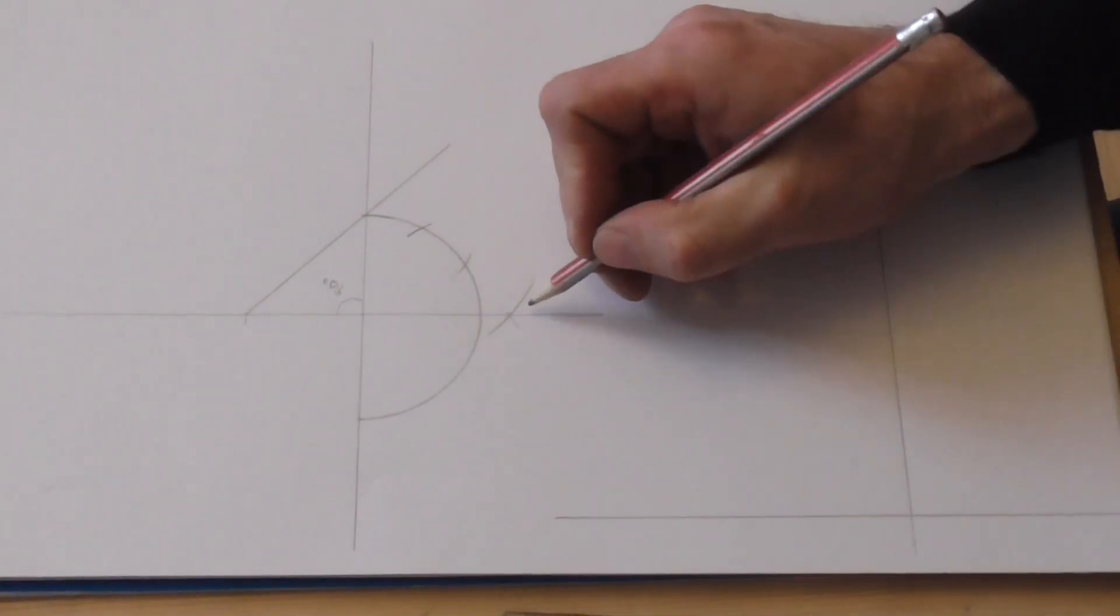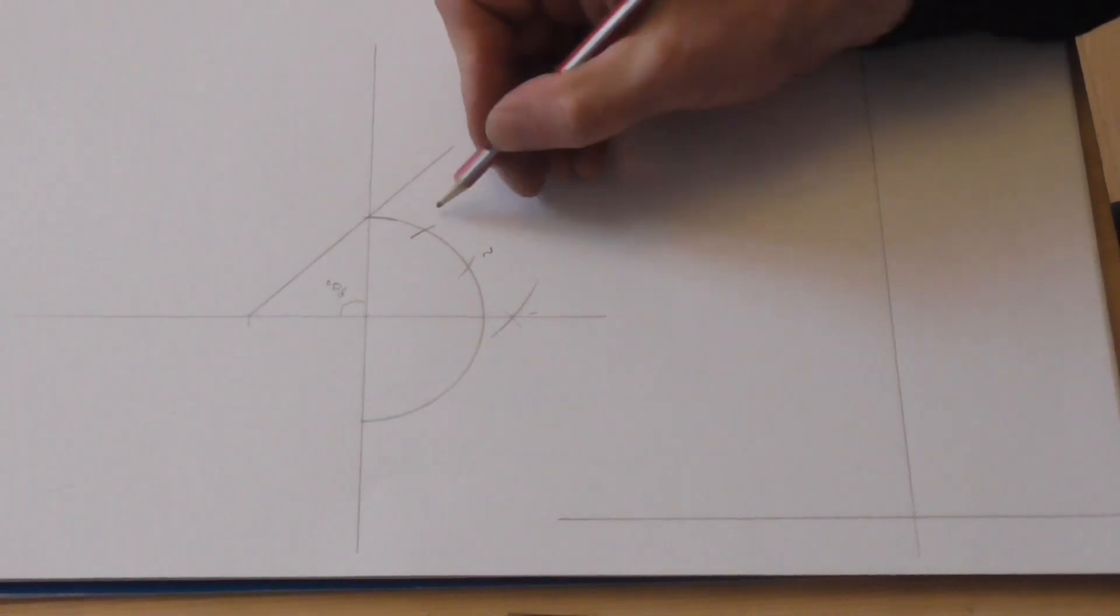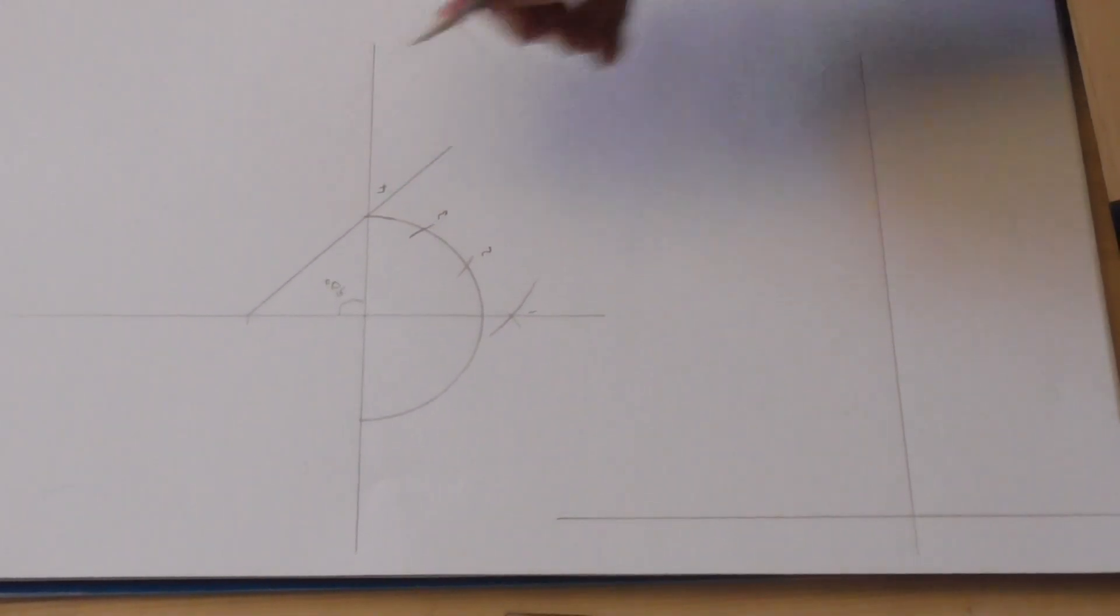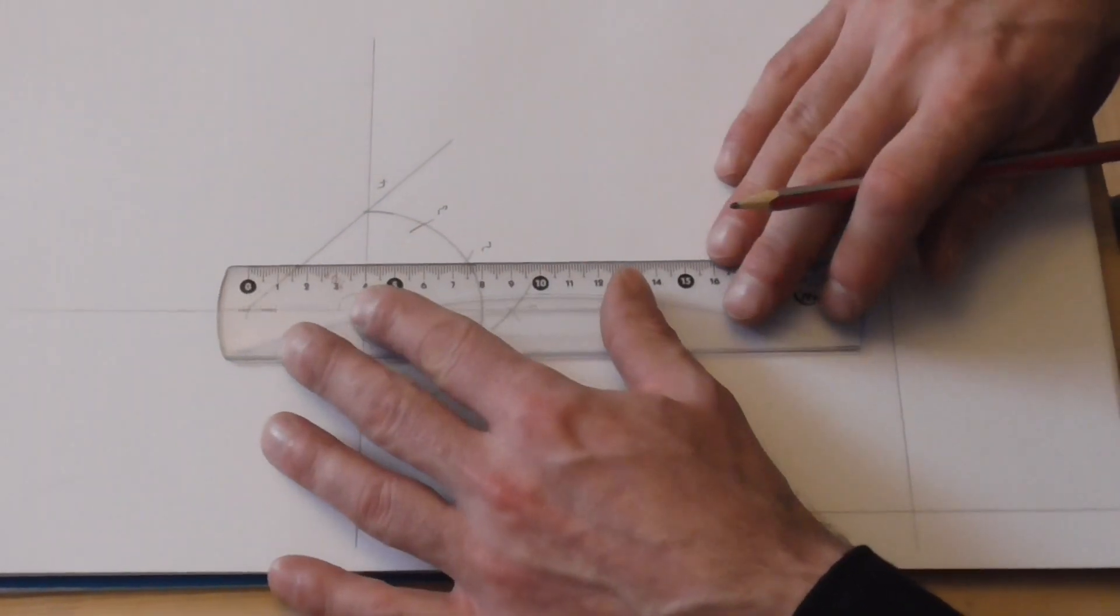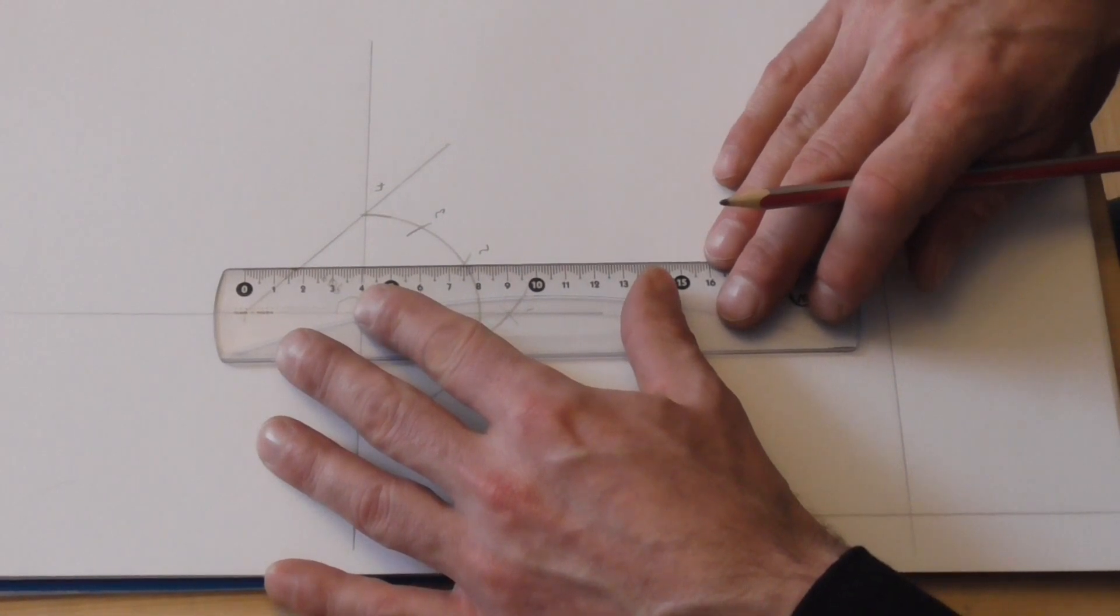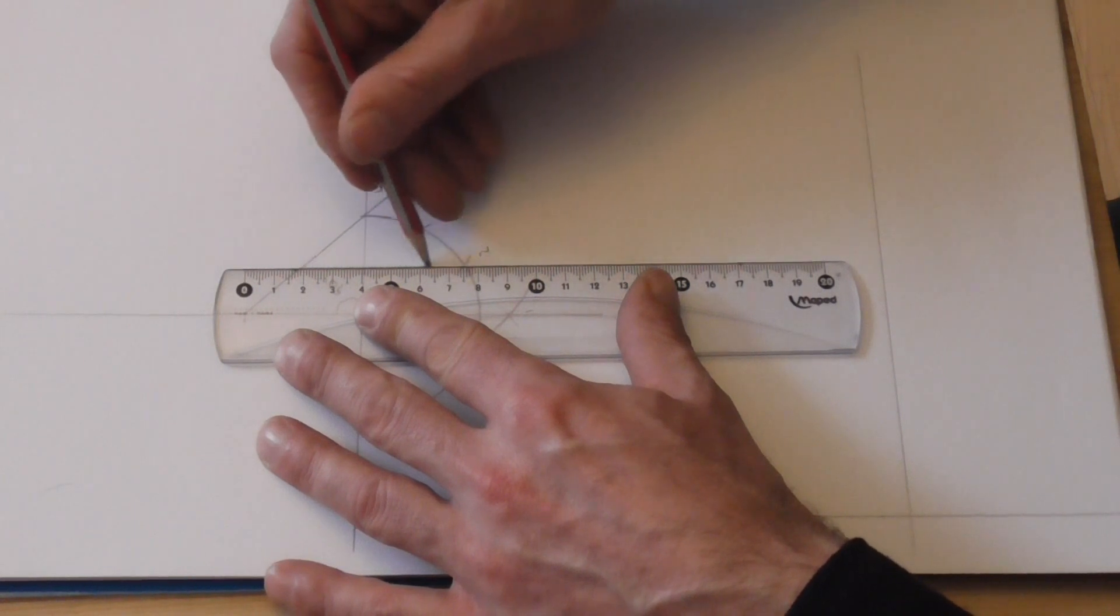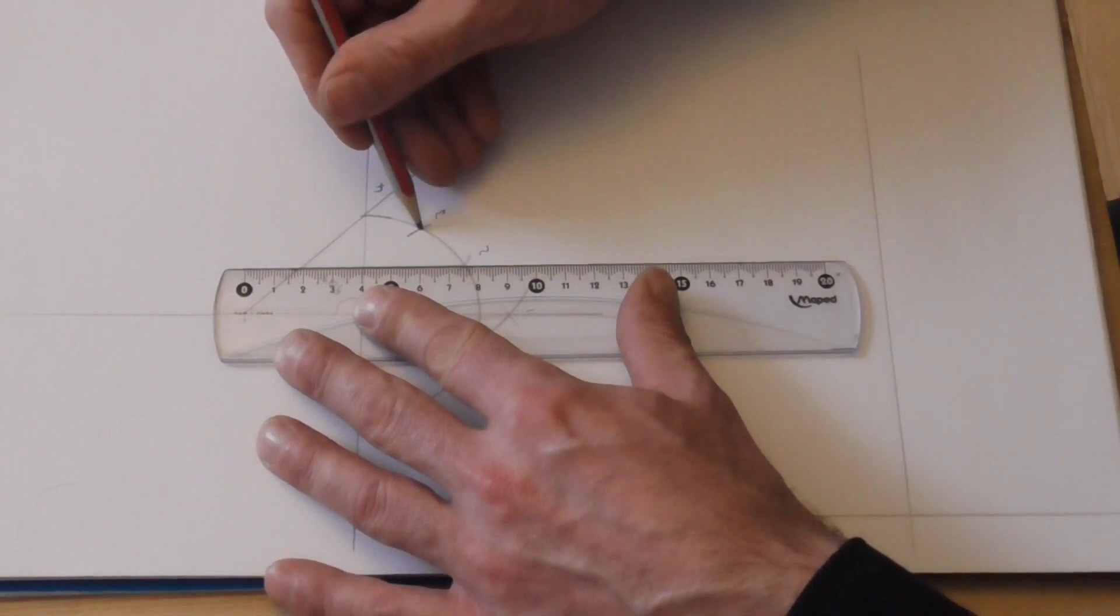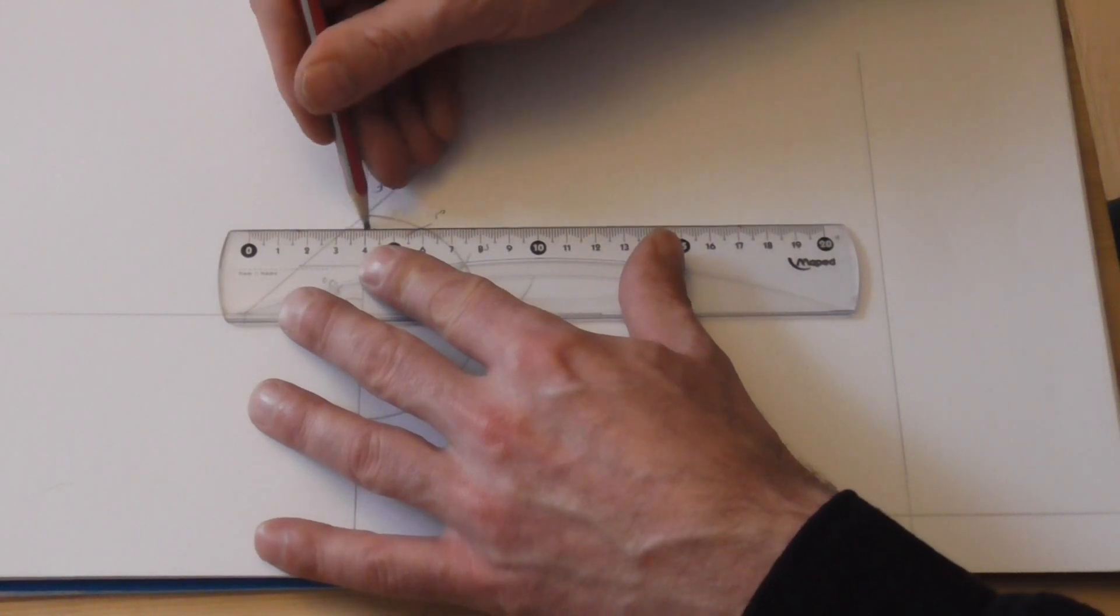Right. So, we'll number these. One. Two. Three. And four. We now need to draw in vertical lines to the line of intersection. This is our line of intersection here. Like that in. And the same again with this one. There we go.